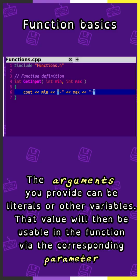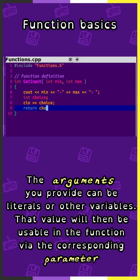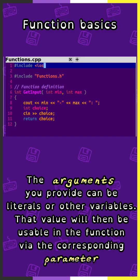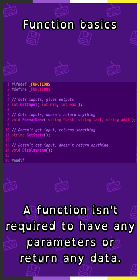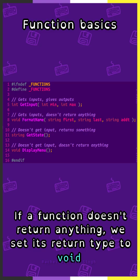The arguments you provide can be literals or other variables. That value will then be usable in the function via a corresponding parameter. A function isn't required to have any parameters or return any data. If a function doesn't return anything, we set its return type to void.